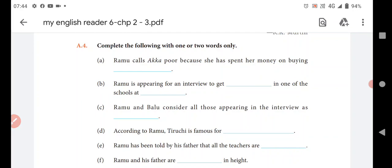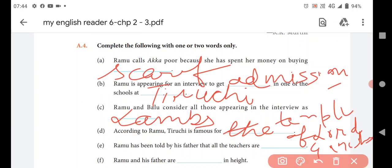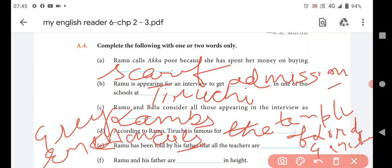Ramu has been told by his father that all the teachers are... This answer is what will be? Gray immenses. If you don't understand the spelling, you can go through the chapter.